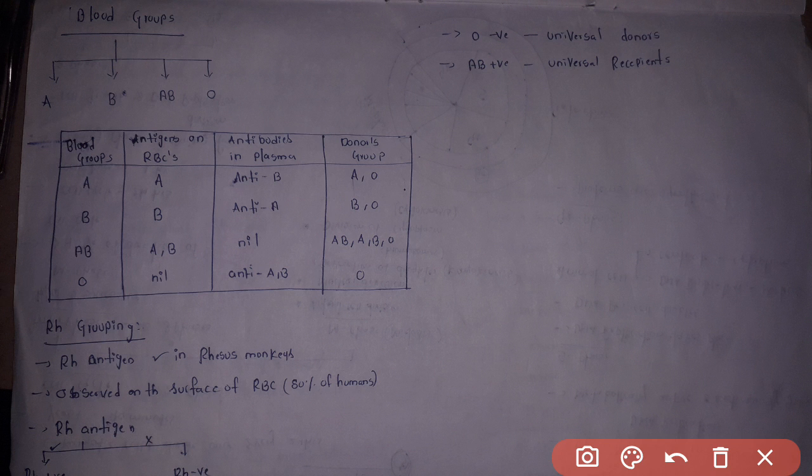Blood groups. There are A, B, AB, and O blood groups. Actually, blood groups are based on antigens present in RBC, red blood cells, and antibodies present in plasma.